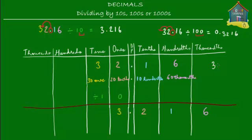Similarly, if I ask you to divide 32.16 by one thousand — no prize for guessing — all you have to do is move the decimal point three places to the left. There are only two digits to the left, so a zero is placed in the remaining position. So 32.16 divided by 1000 gives you 0.03216. We moved the decimal point three places to the left because there are three zeros in one thousand.